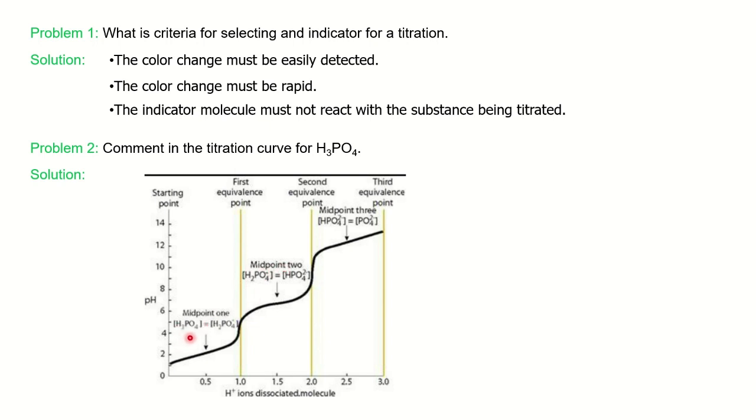So H₃PO₄, when you start adding NaOH, it will convert into H₂PO₄⁻. And at first midpoint, which is your first buffer solution, the two species will be in equal concentration. Then if you continue the titration, it will reach your first equivalence point where entire H₃PO₄ will convert into H₂PO₄⁻. That is the first equivalence point.